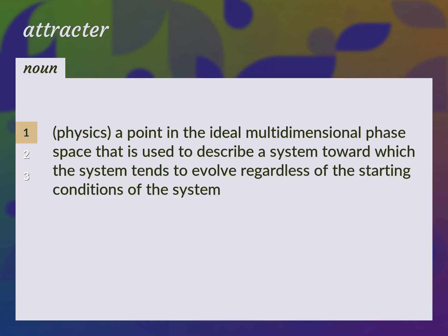Physics. A point in the ideal multidimensional phase space that is used to describe a system, toward which the system tends to evolve regardless of the starting conditions of the system.